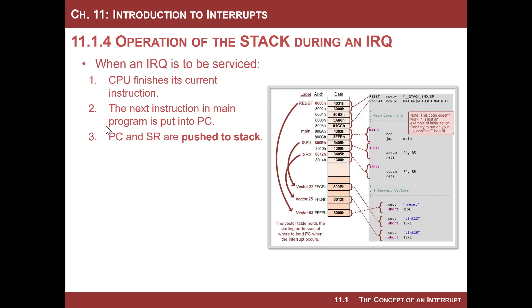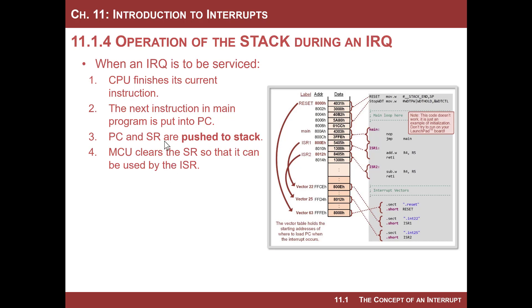The next step of handling an interrupt is that you want to preserve the program counter and the status register — you push them to the stack. Then you clear the status register, because the interrupt service routine doesn't need any of the flags that were used in the main program; you want to give it a fresh status register. Clearing it will also disable maskable interrupts because the GIE bit is in there.